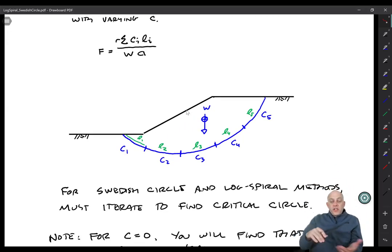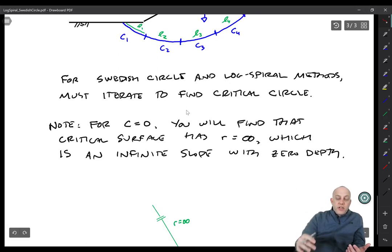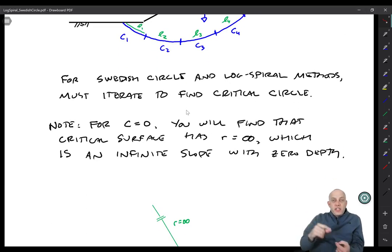And then for both the Swedish circle and the log spiral methods, you still have to iterate over trial surfaces until you get the minimum factor of safety. Sometimes we can make a pretty good guess about what that critical circle is going to be, but usually we have to test out a few of them. And so you can already see it's difficult to find W and A, and now we're going to have to repeat it a bunch of times. It seems like a task that's well suited for a computer program, and that's what we do with the method of slices.